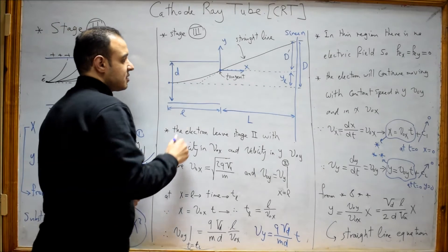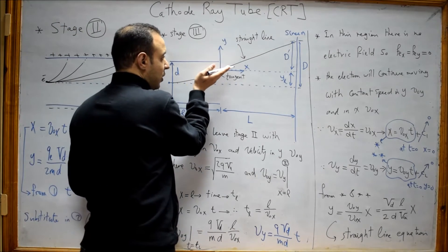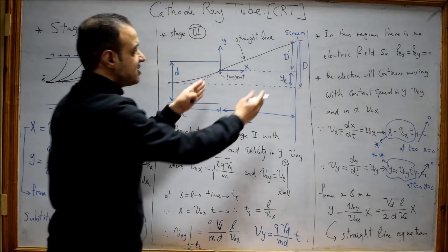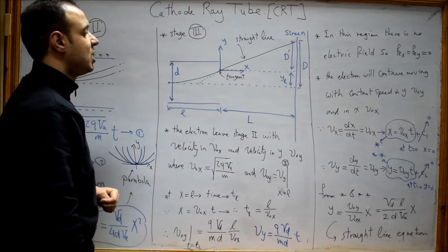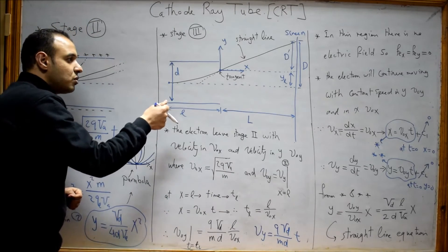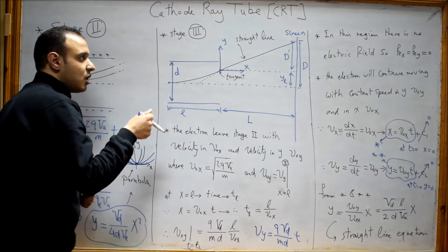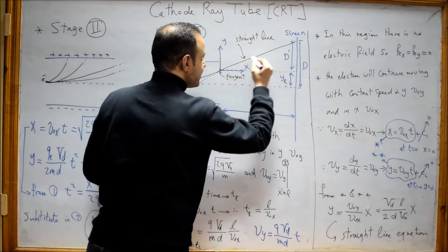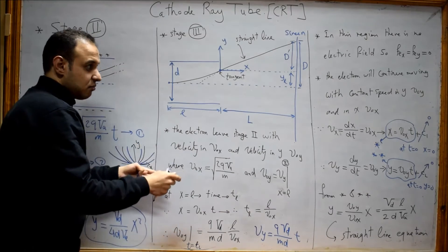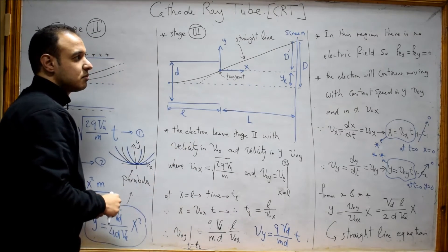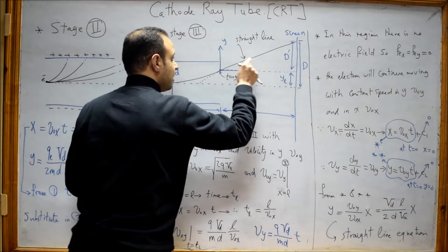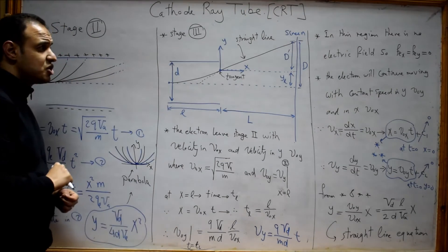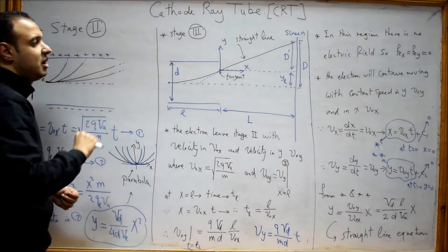For the cases in which the electron successfully leaves the deflection plates, the electron will head toward the screen, which is stage number 3. We want to know the equation of motion of the electron in this stage. As we can see, the trajectory will be a straight line, and shortly we will prove this.